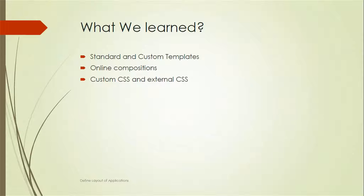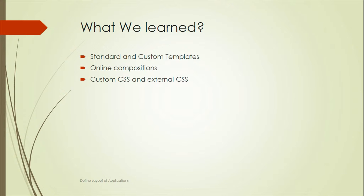That's it about this unit. We have learned about standard and custom templates, ready to run templates, online compositions, custom CSS, and external CSS. We will be seeing this practically for each component — how we can use standard templates, custom templates, custom CSS, and external CSS. I hope you have understood this unit. If you have any questions, please post them in the comment section. Please like my video and subscribe to my channel so you will know about my next unit video. Thank you for watching.